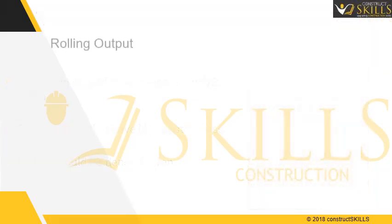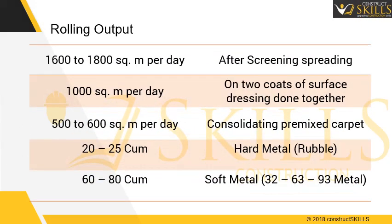Rolling output: a static roller compacts about 25 cubic meters of hard metal in a day. This is approximately equal to 1 km of rolling for a 4 meter wide road. With use of a vibratory roller, greater efficiency can be achieved.